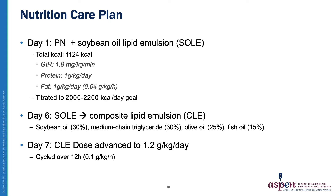The nutrition plan was to initiate PN with soybean oil lipid emulsion, slowly advancing to around 2,000 calories over the next few days. On PN day 6, the lipid was switched from a soybean oil emulsion to a composite lipid emulsion, due to anticipated long-term PN course, per our institution's standard practice. On PN day 7, the lipid dose was increased to 1.2 grams per kilo per day and cycled over 12 hours.